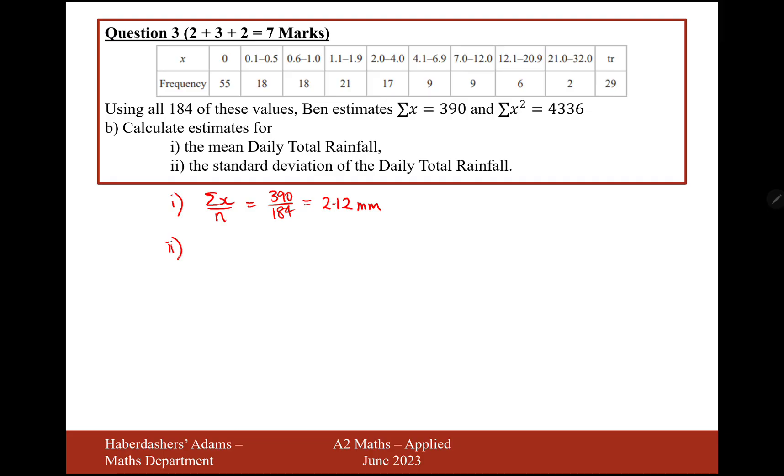Part two is the standard deviation, which is the square root of the sum of X squared over N minus the mean squared. So square root of 4,336 divided by 184, take away 2.12 squared, or use the answer button in the calculator. 4,336 divided by 184 minus answer squared gives you 4.37. That's the answer for part two.